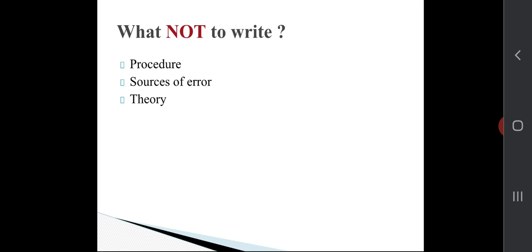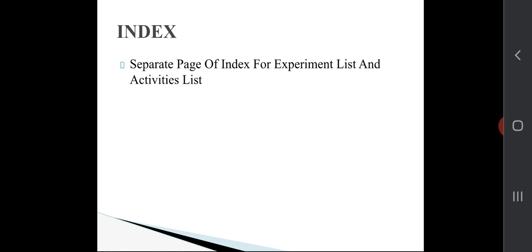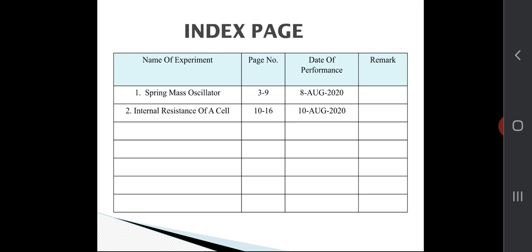Now, how to write the index. There will be two separate index: one for experimental list and one for the activities list. So this is the index page. The front index page you should use for the experiment list.